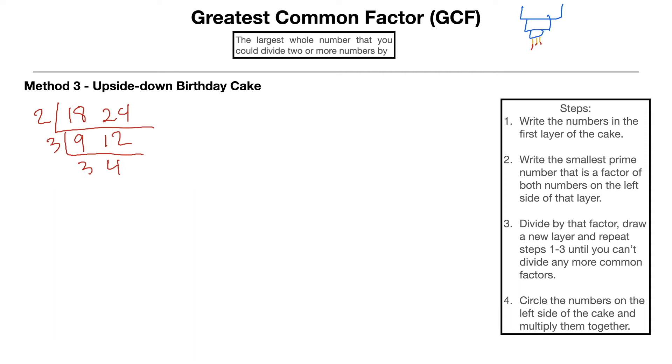I cannot divide by any more prime numbers—2, 3, 5, 7. I'm done. So I'm going to move on to step 4, our final step: Circle the numbers on the left side of the cake and multiply them together. We've got these two numbers right here. 2 times 3 equals 6, so our GCF equals 6. We have solved that problem. We were just looking for the factors they have in common, and that's a really quick way to do it.